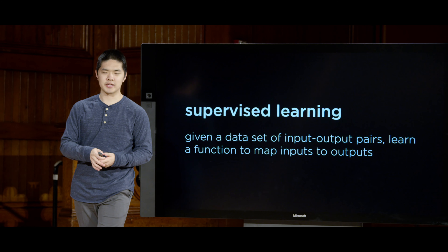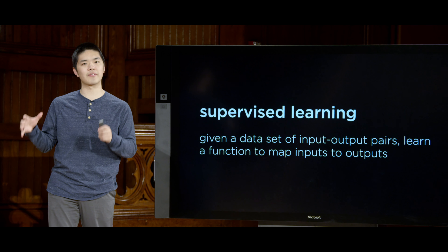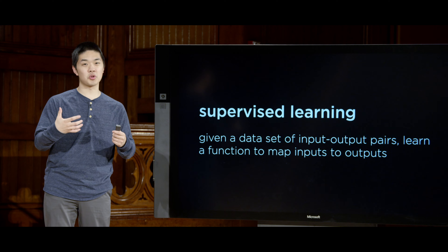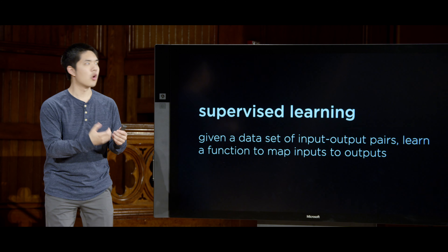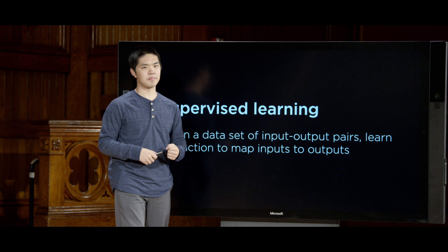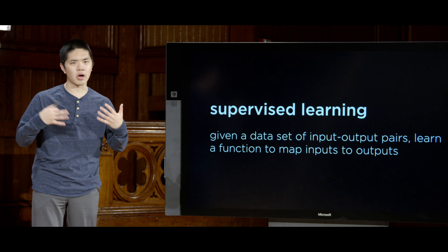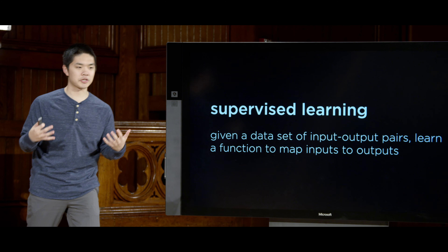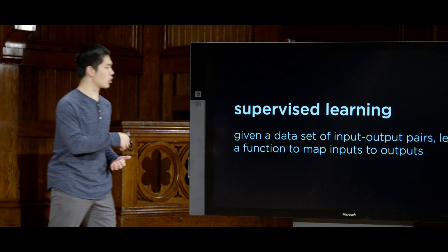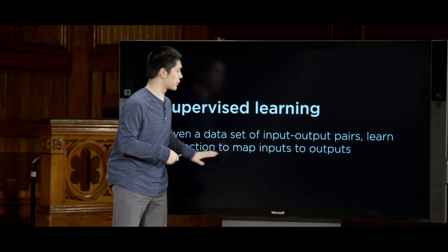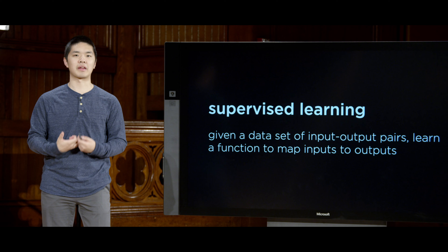We have a whole bunch of data that generally consists of some kind of input — some evidence or information the computer will have access to — and we would like the computer, based on that input, to predict what some output is going to be. We'll give it data so the computer can train its model and begin to understand how the inputs and outputs relate to each other. Ultimately, we hope our computer will be able to figure out some function that, given those inputs, is able to produce those outputs.